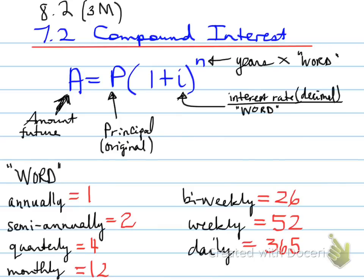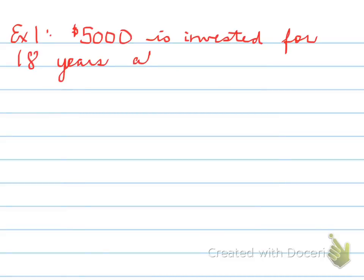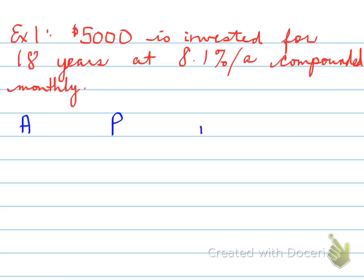All right, let's see these words put to use. Here's an example. $5,000 is invested for 18 years at 8.1% per annum compounded monthly. So, you need to find out how much is it worth after 18 years.